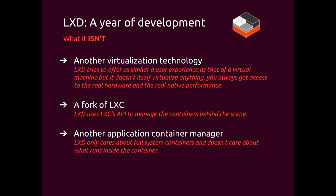What LXD isn't: it's not a virtualization technology — we only use containers and namespaces in the kernel, so it runs on every architecture, it's very fast, runs inside VMs. It is also not a fork of LXC; we are the same project. LXC has been around for over a decade, it's written in C — a low-level C library to interact with the kernel. LXD is one level up; it uses LXC through a Go binding, while still keeping libLXC in C as the low-level interaction with the Linux kernel, because interacting with namespaces from Go is not very fun.